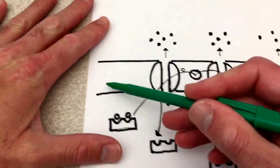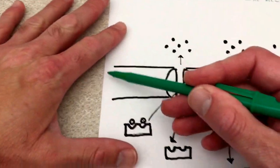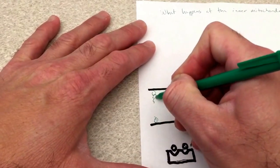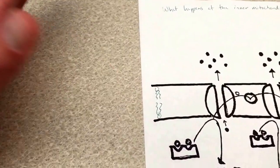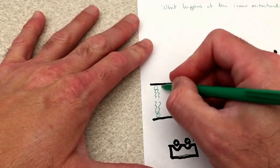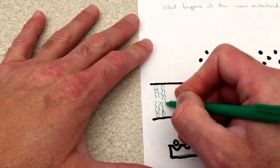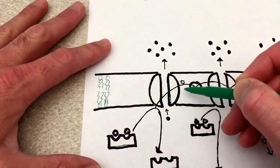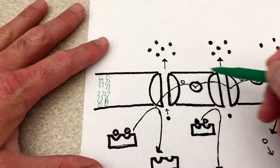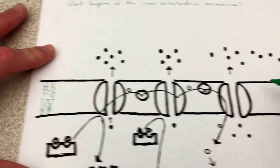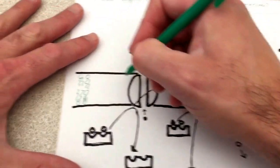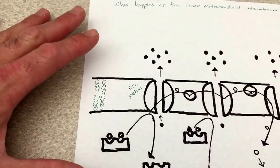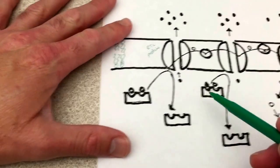Here we are looking at the mitochondrial inner membrane, which I've illustrated as two parallel lines — this is our phospholipid bilayer. I've drawn two little phospholipids facing each other so that we know this is a phospholipid bilayer. Each of these little oval shapes are membrane-embedded proteins — these are proteins of the electron transport chain, which we'll label as ETC proteins.